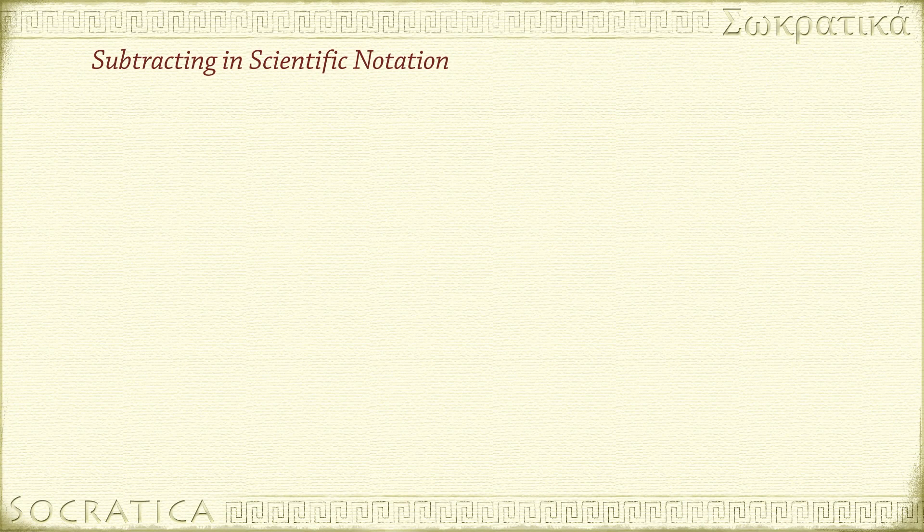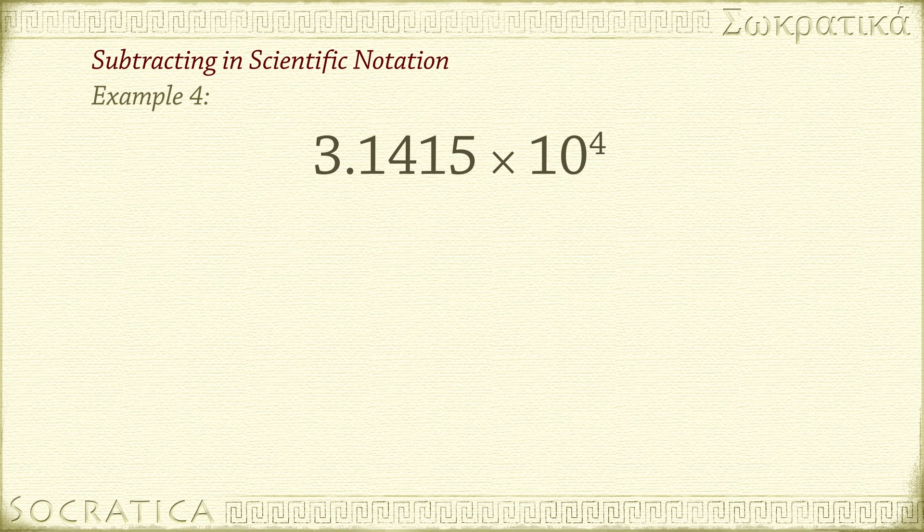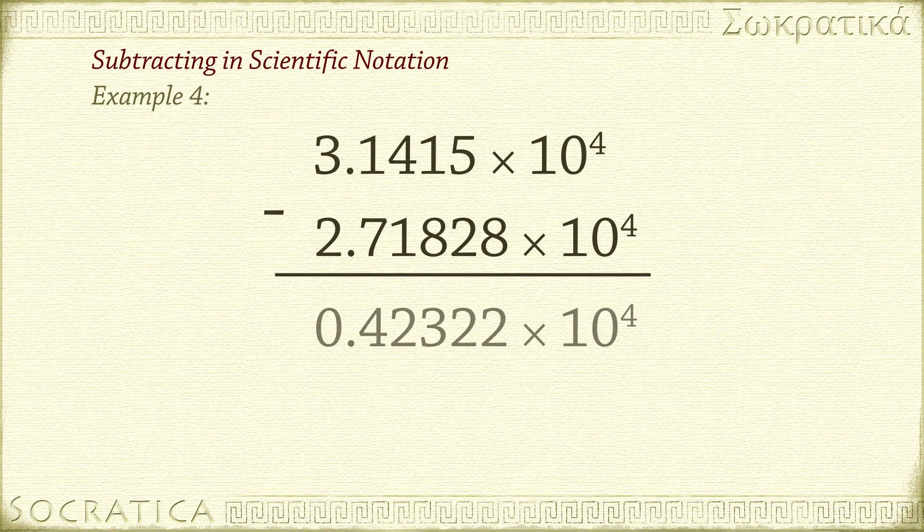The same rules apply if you are subtracting. As long as the base and exponent of the two numbers are the same, you can just do the operation on the coefficients. For example, 3.1415 times 10 to the negative 4 minus 2.71828 times 10 to the negative 4 equals 0.42322 times 10 to the negative 4. Rewrite in scientific notation by moving the decimal point one place to the right: 4.2322 times 10 to the negative 5, and we already have the correct number of sig figs.